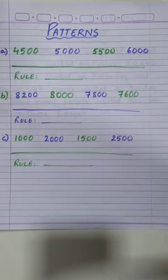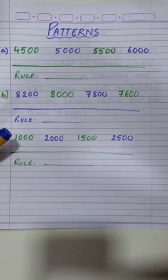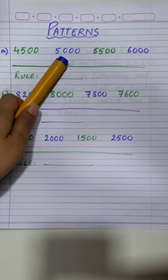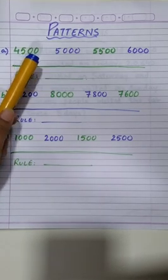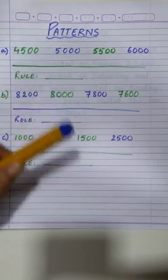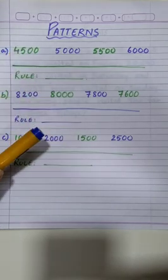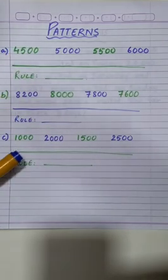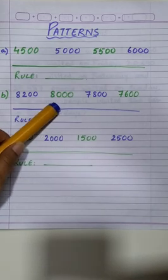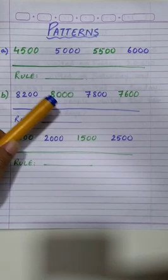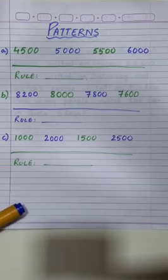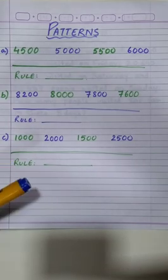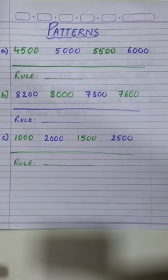In the first one, always remember the rule: if the second number is bigger than the first number, we will check the addition rule. And if the second number is smaller than the first number, we will use the subtraction rule. Let's try.